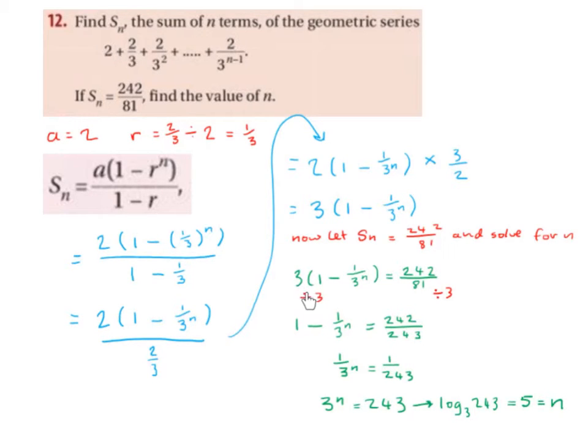Next we want to get rid of this 3, so we're going to divide across by 3. So 242 over 81 divided by 3 is 242 over 243. And we bring down the 1 minus 1 over 3 to the power of n.